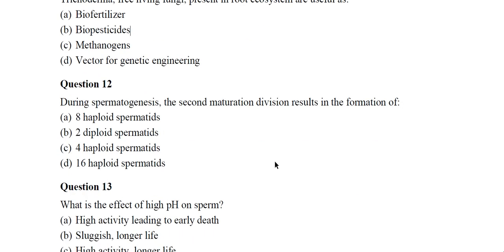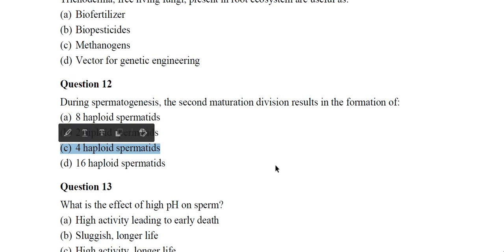Question 12: During spermatogenesis, the second maturation division results in the formation of — option C is the correct answer: four haploid spermatids.